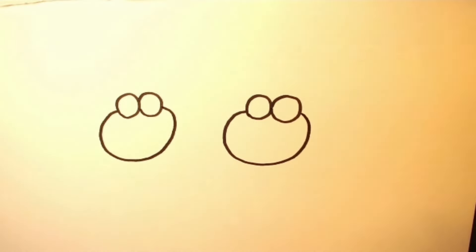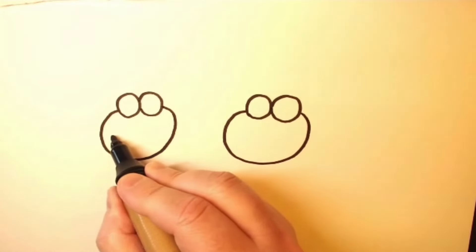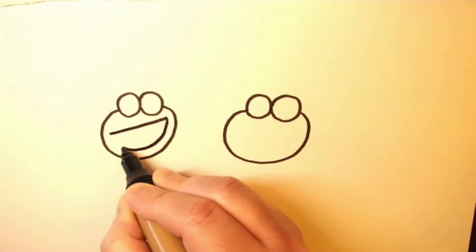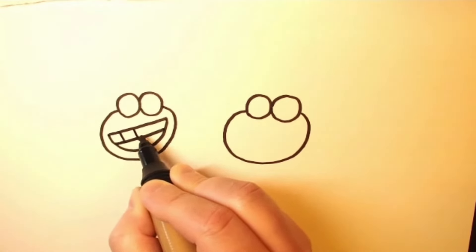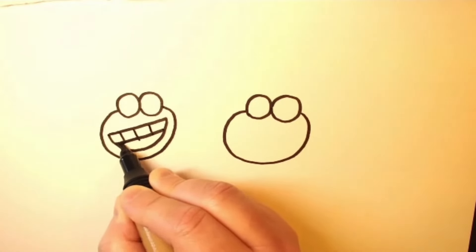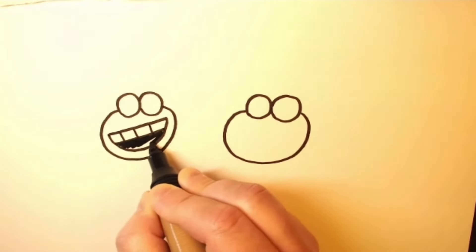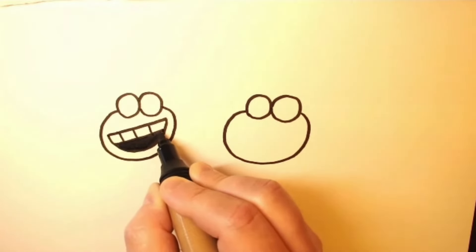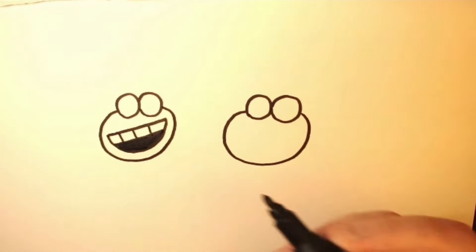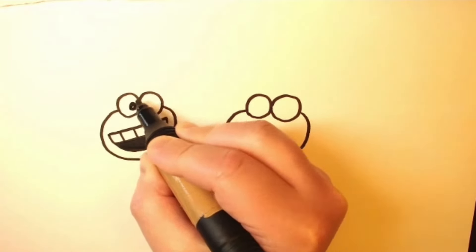And it's easy to give them expressions. Let's make this one happy. Her mouth is basically the letter D turned sideways and add some teeth and color in the bottom part. And then we'll put some of the pupils here.